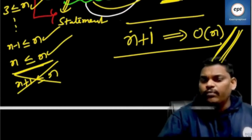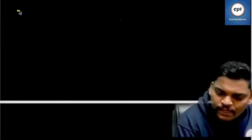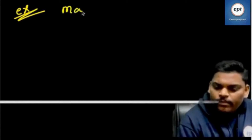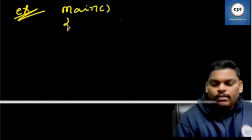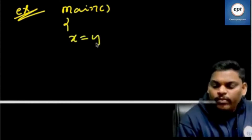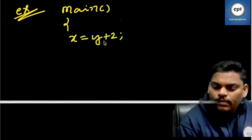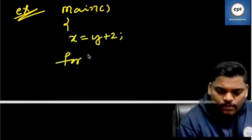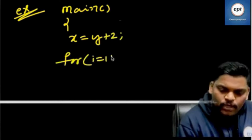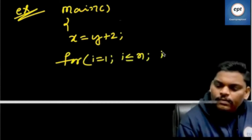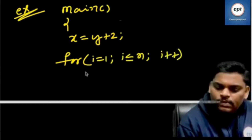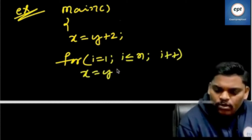That is the reason it is called Big O notation — whichever bigger you take. Example 3: main. X is equal to Y plus Z. For I is equal to 1, I less than or equal to N, I plus plus — X is equal to Y plus Z.